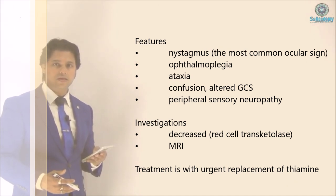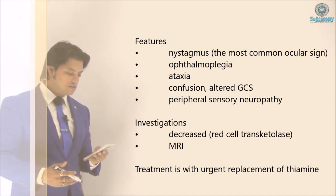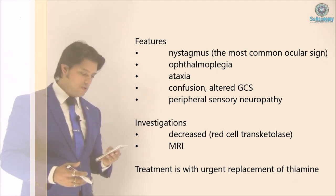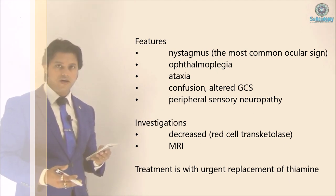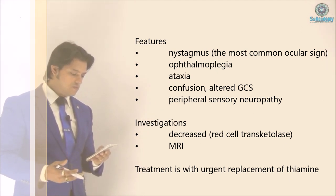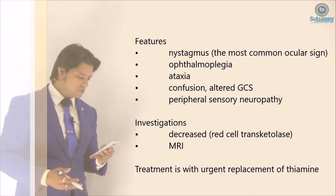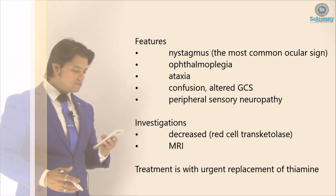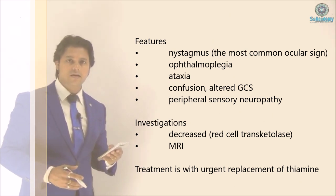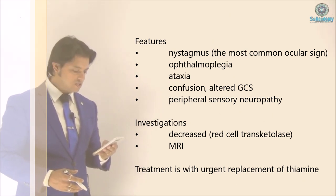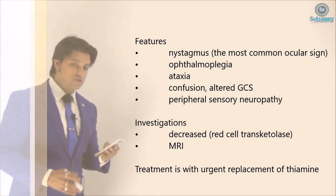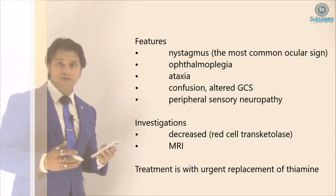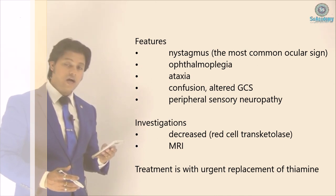Peripheral sensory neuropathy is essentially the same as alcoholic neuropathy, occurring alongside Wernicke's syndrome due to vitamin B1 deficiency. Investigations include red cell transketolase — circle that — and MRI. Treatment is urgent replacement of thiamine.